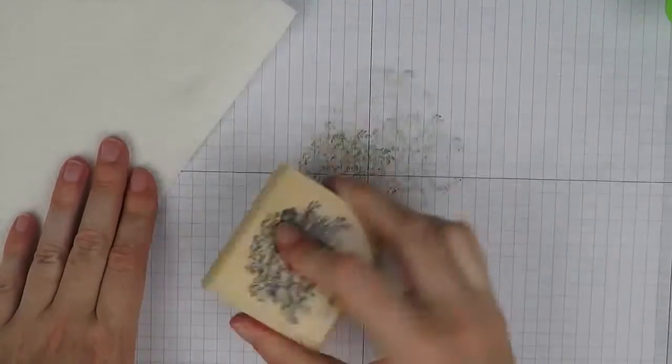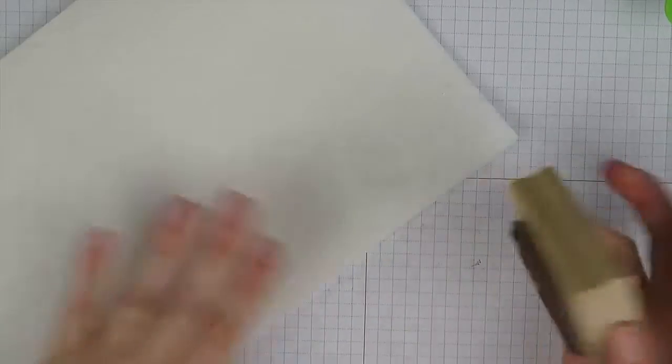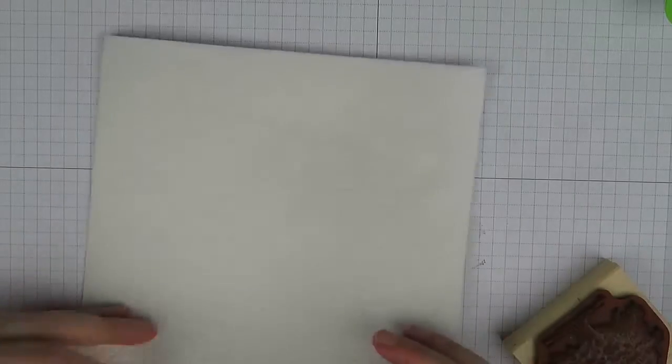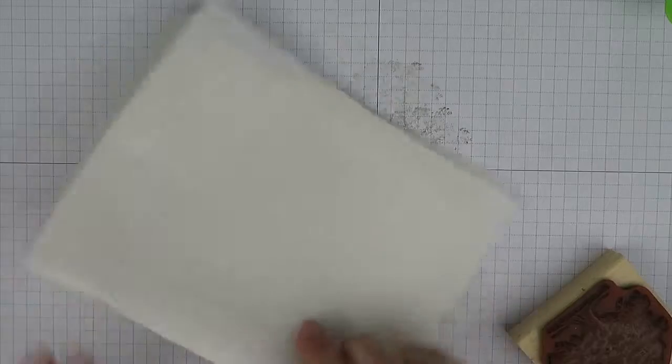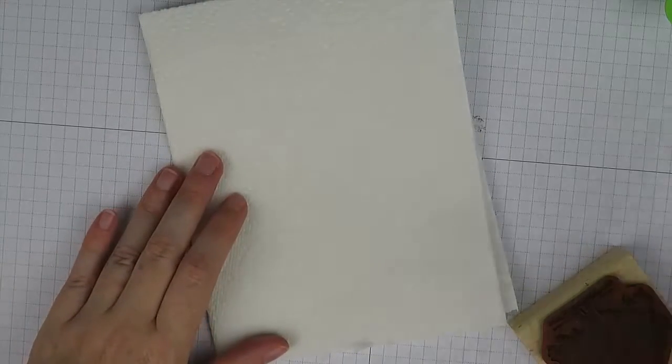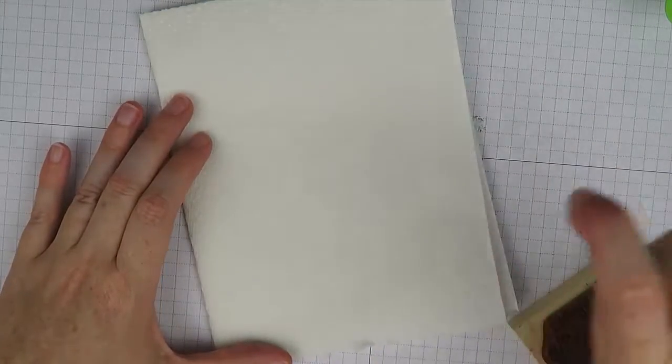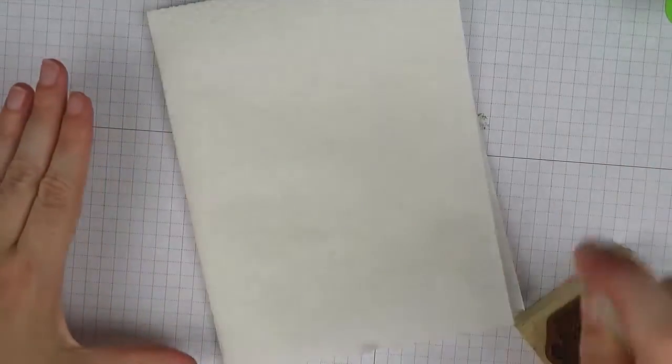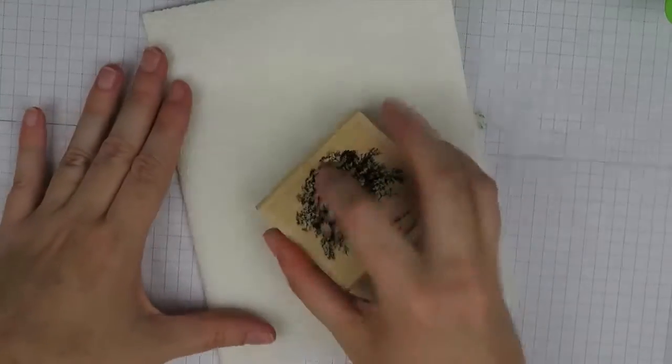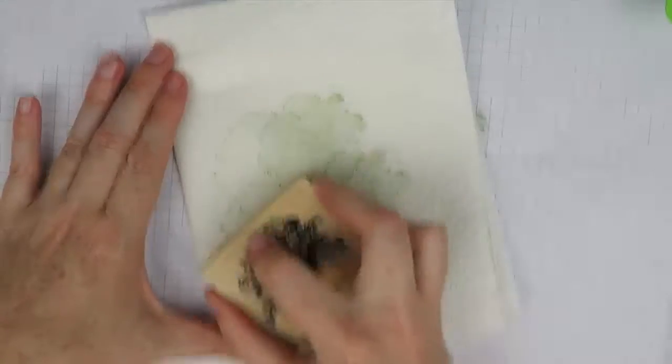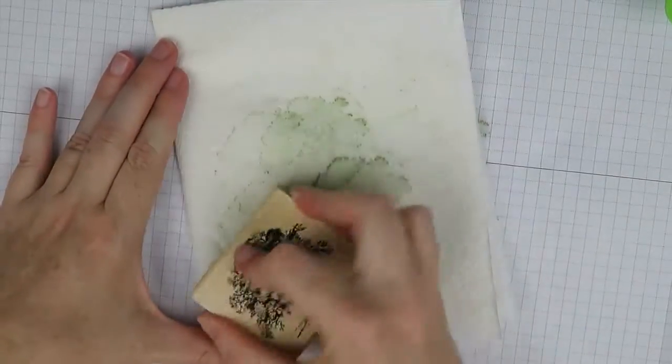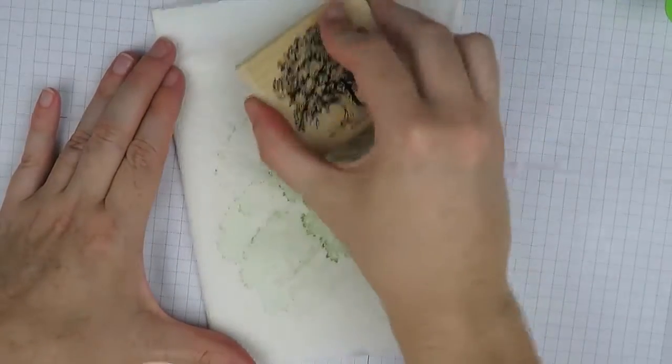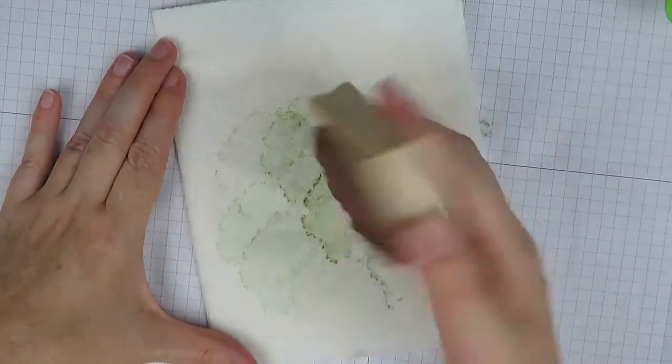Then you're going to take your paper towel and you're going to fold it into four, and then you can spritz it with a little bit of water. You just want to do that so it's damp, and you take your stamp and you press it all over the paper towel until most of the color has come off.